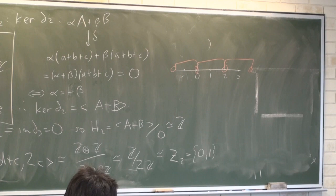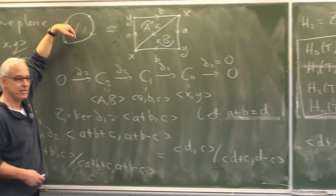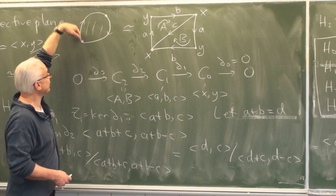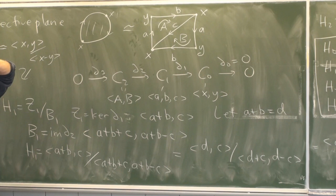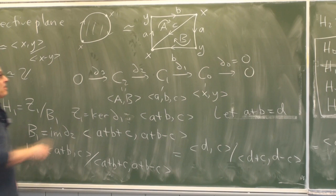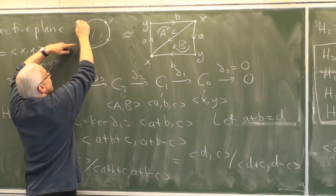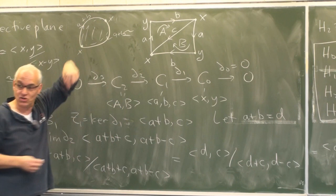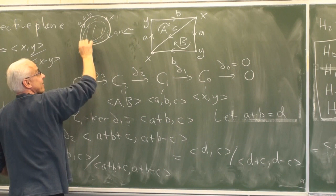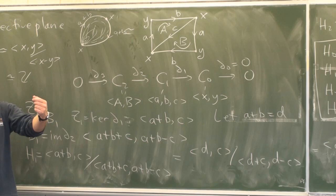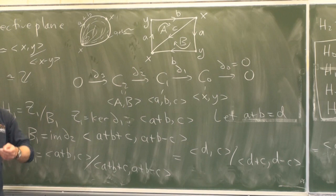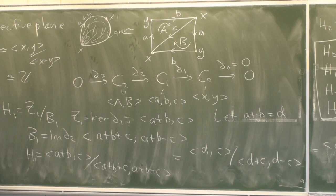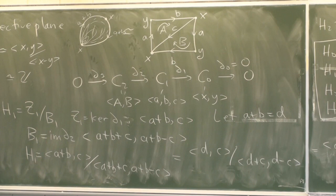Geometrically, this corresponds to: the loop A plus B is not homologous to zero — you can't contract it. But twice that loop, which is 2(A+B), is homologous to zero — you can contract it. So you have a loop that is not zero, but twice that loop is zero. That's the geometric explanation for the Z₂ torsion: H1 of the projective plane is Z₂.